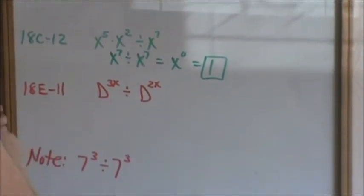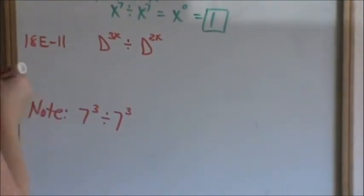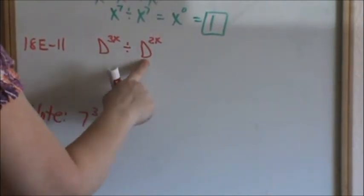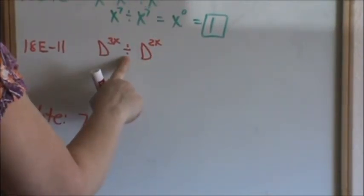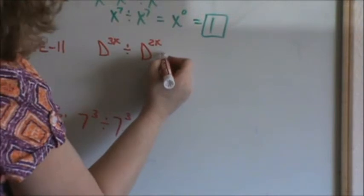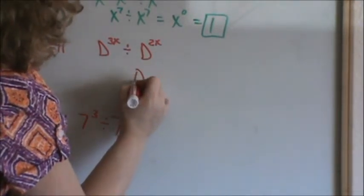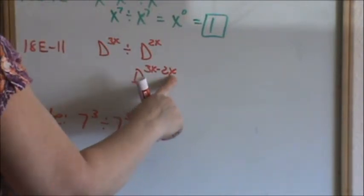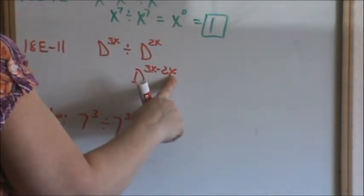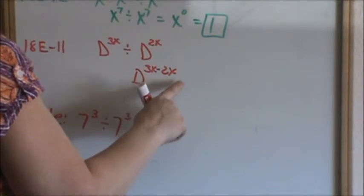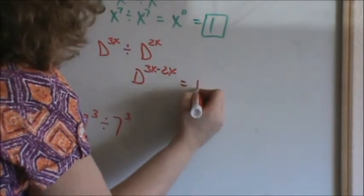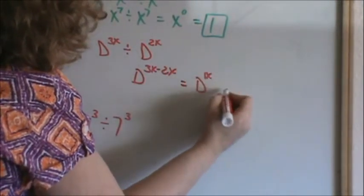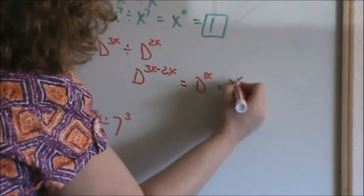Now moving on to 18e number 11. We have the same bases. We are dividing, so we subtract our exponents. So that is the same as saying d to the 3x minus 2x. The x's are the same, so we can combine the same like terms. We can combine like terms. So 3x minus 2x is 1x, or you can just write it d to the x.